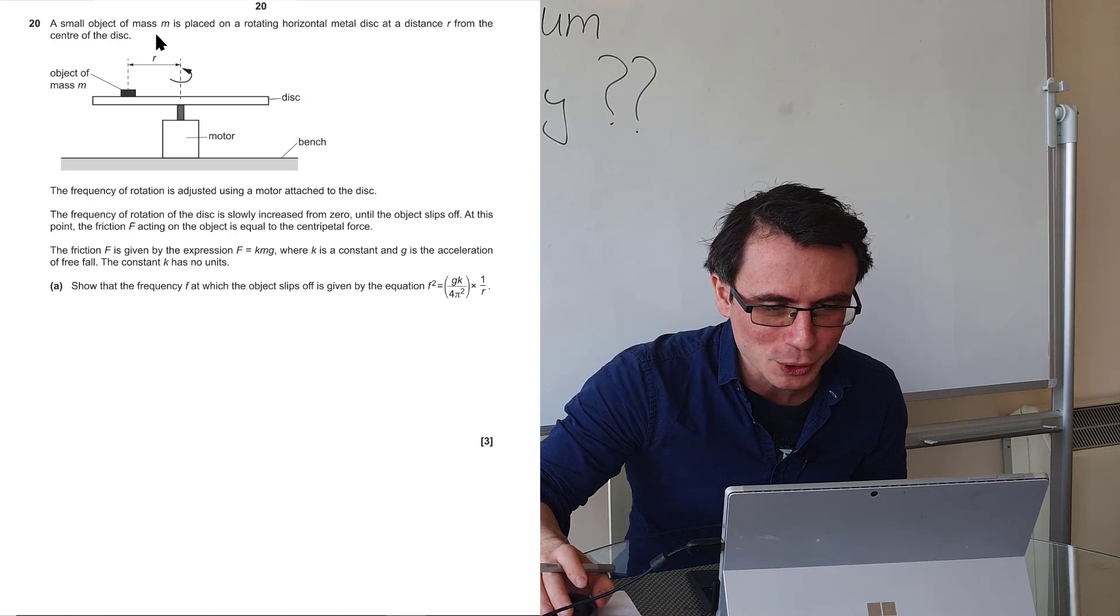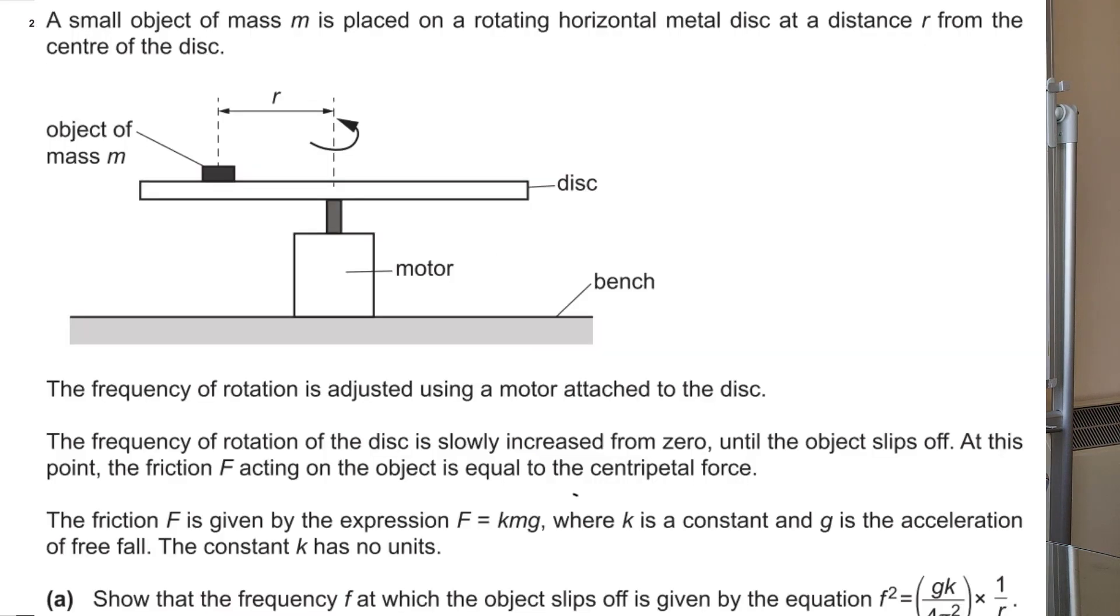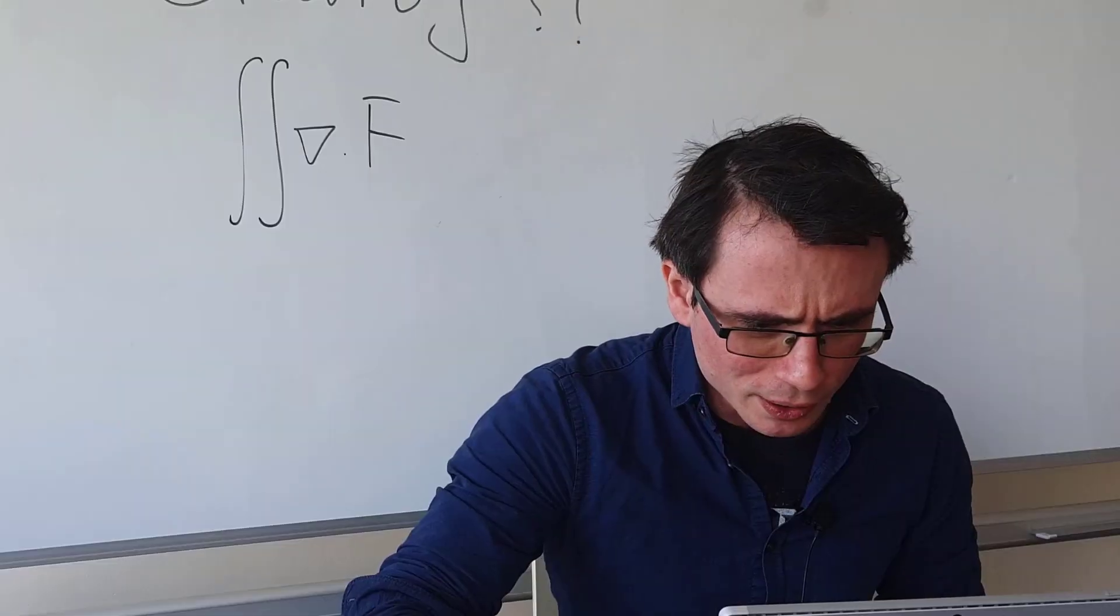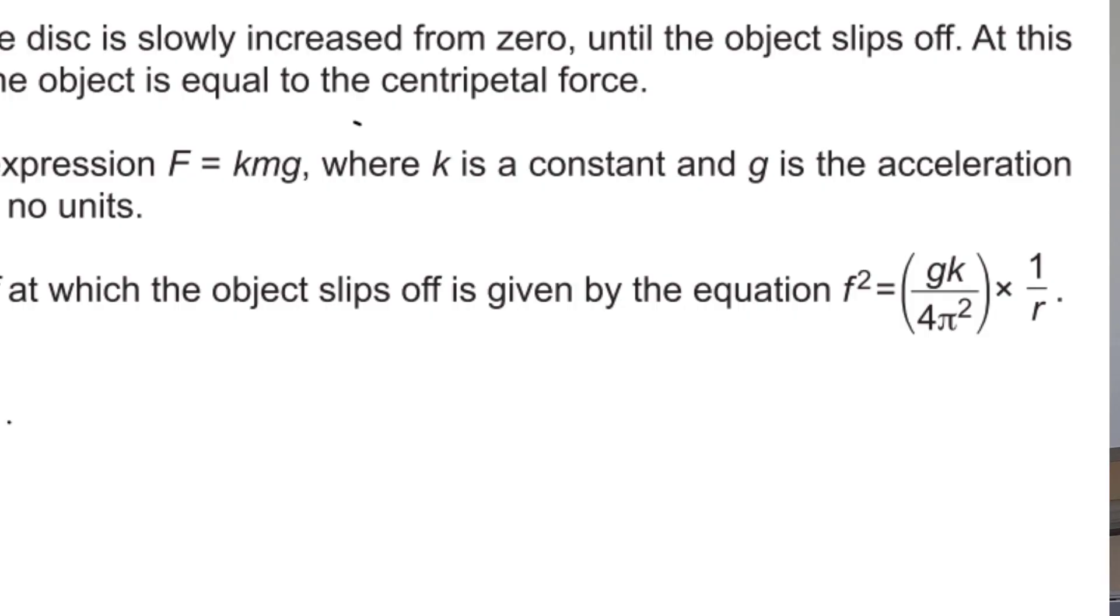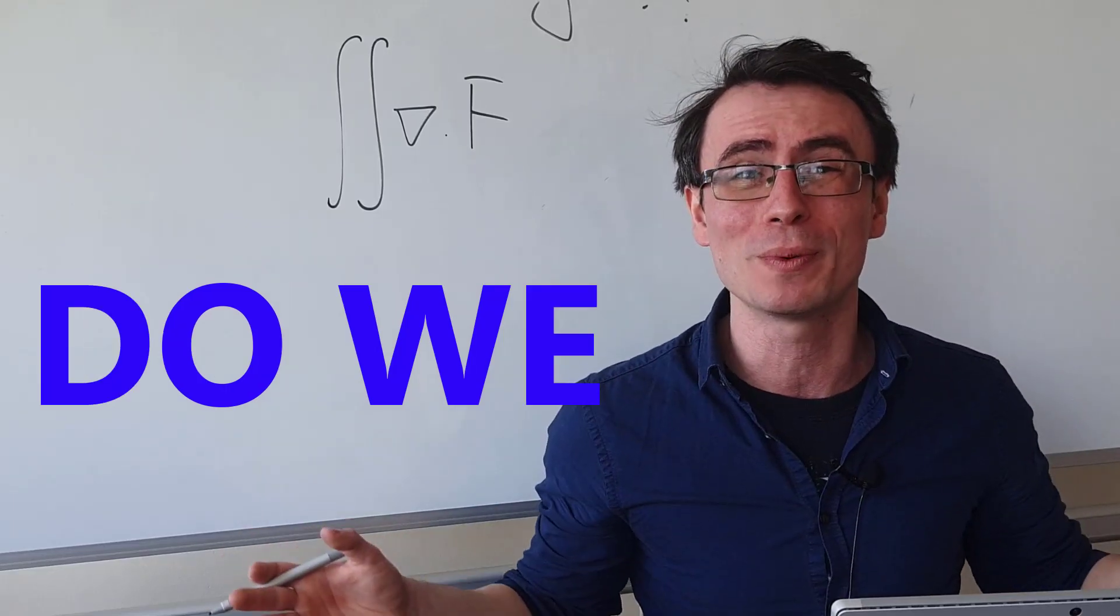We have a small object of mass m which is placed on a horizontal rotating disk. So this thing is rotating at the distance r from the center of the disk. We're given the frequency of rotation. Show that the frequency is given by this complicated looking equation. How do we even start?